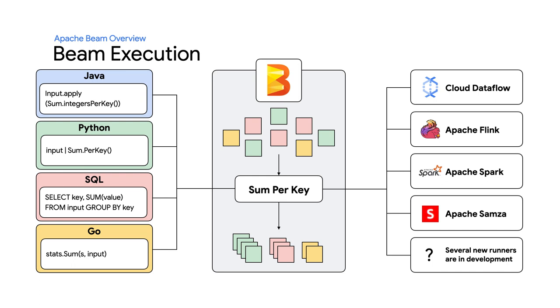If you like choices, you'll be happy to know that it lets you choose where to run it. You can run it on-prem or on the cloud, and it lets you pick your favorite among several programming languages, including Python, Java, and even Go. If you have a data processing problem at scale, there is an excellent chance that Apache Beam is a great solution for you.